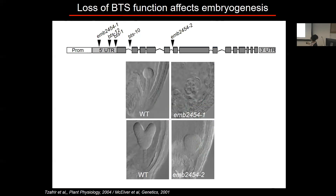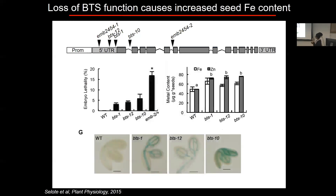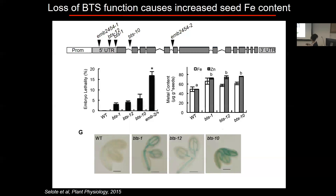This was particularly interesting because there are embryo-lethal alleles of Brutus. These alleles arrest at two different stages of embryo development. We looked at embryo lethality across alleles and measured iron in seeds — finding that both iron and zinc are elevated in Brutus mutants, visualized with Perls staining. This suggests that loss of Brutus function leads to excess iron in seeds and arrested embryogenesis, indicating Brutus represses iron uptake to prevent too much iron entering the developing seed.